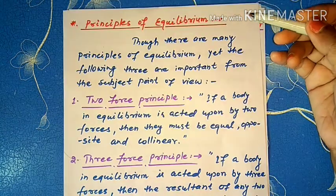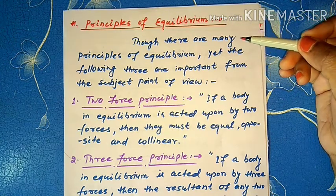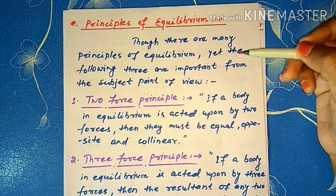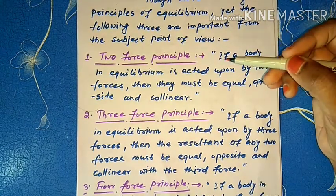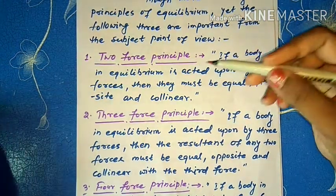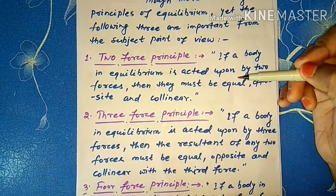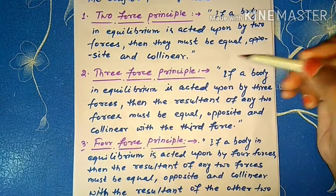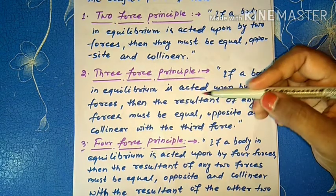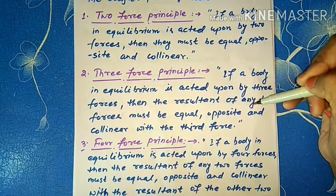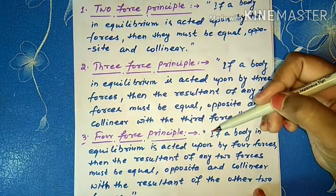Now, principles of equilibrium — though there are many principles of equilibrium, the following three are important from the subject point of view. First is the two-force principle: if a body in equilibrium is acted upon by two forces, then they must be equal, opposite and collinear. Second is the three-force principle: if a body in equilibrium is acted upon by three forces, then the resultant of any two forces must be equal, opposite and collinear with the third force.